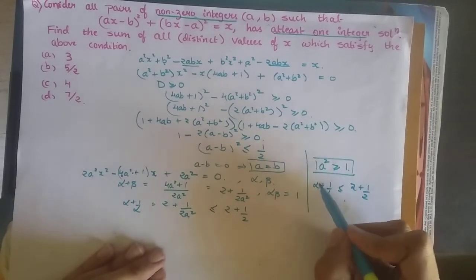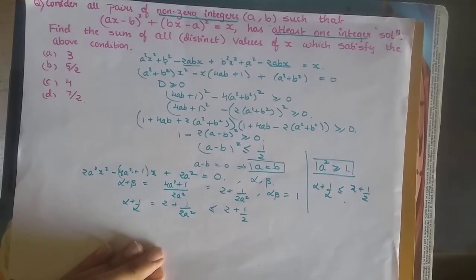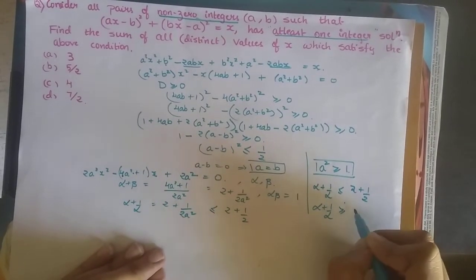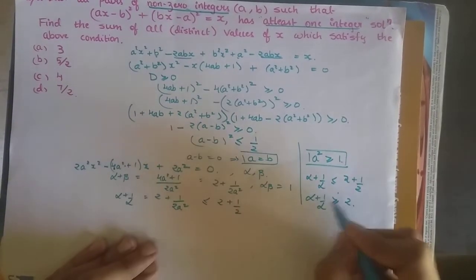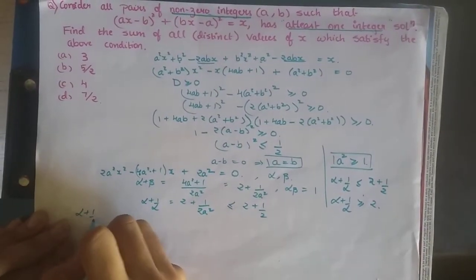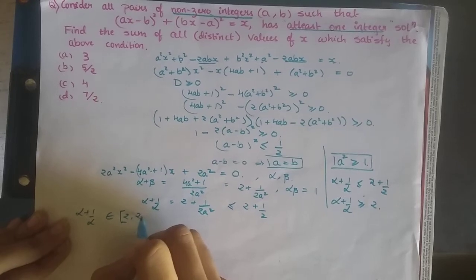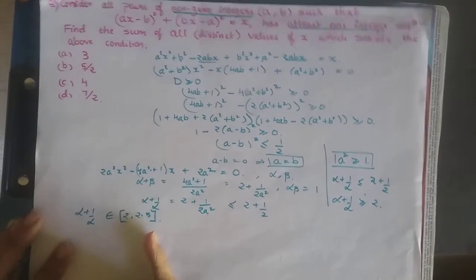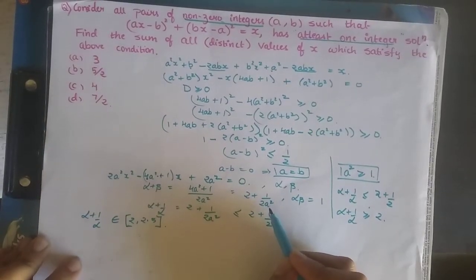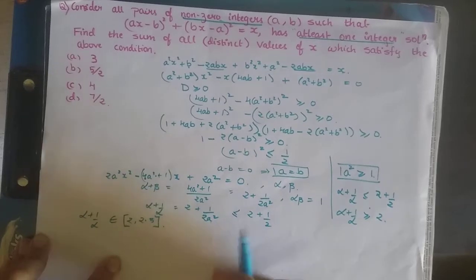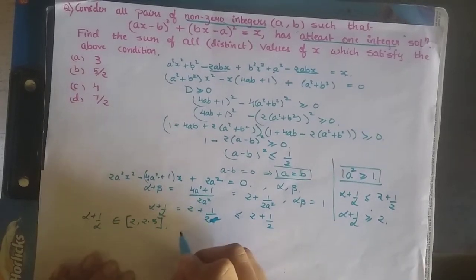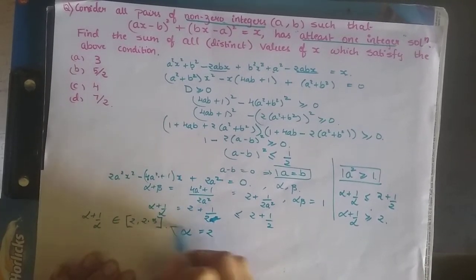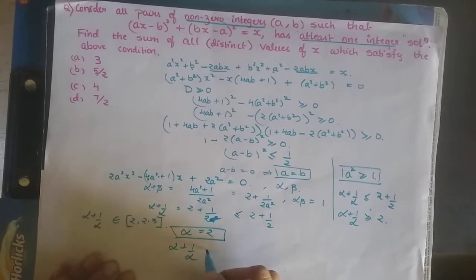By the AM-GM inequality, for any number α, α + 1/α ≥ 2. So α + 1/α lies between 2 and 5/2. When a² = 1, i.e., a = ±1, we get α + 1/α = 2 + 1/2 = 5/2. So the sum of the roots α + 1/α equals 5/2.